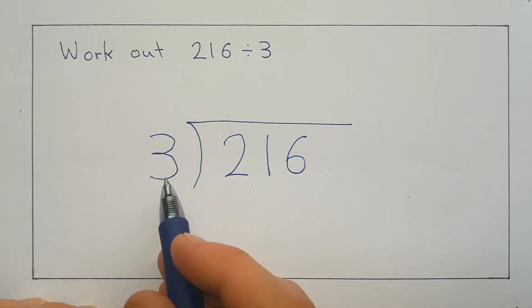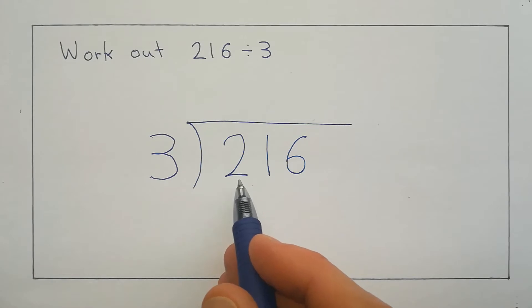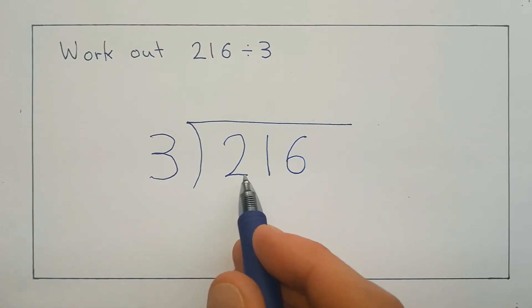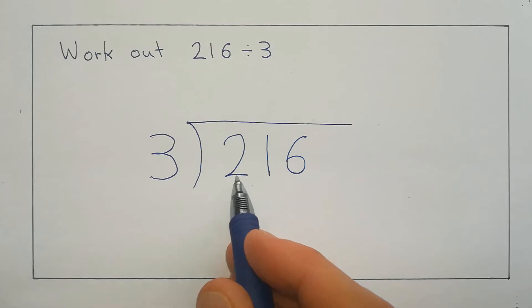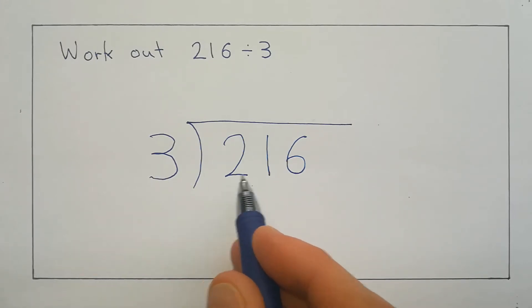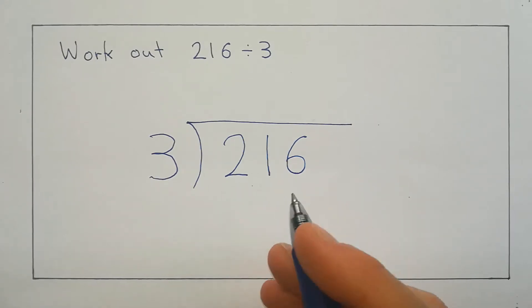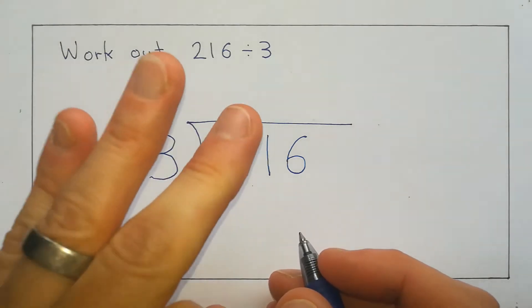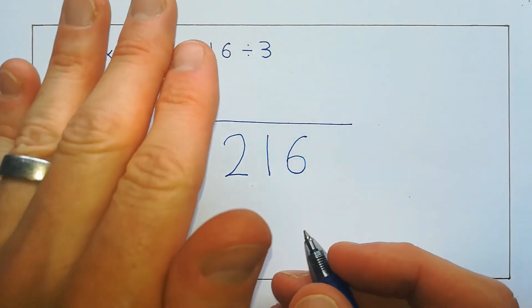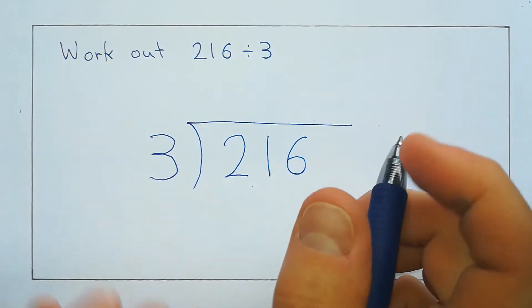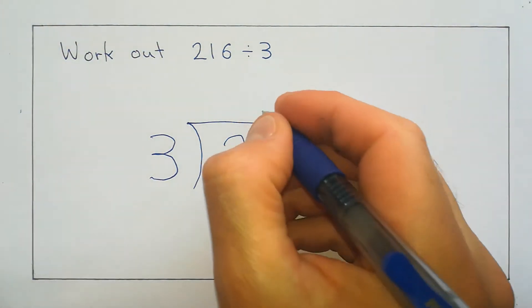We'll start with saying, how many times does 3 go into 2? Well, 3 is bigger than 2, so it can't. So instead we say, well, what about how many 3s go into 21? So we've got 3, 6, 9, 12, 15, 18, 21. So that's 7 times.